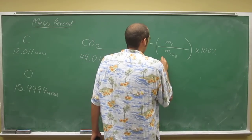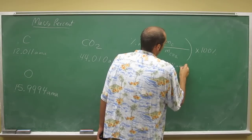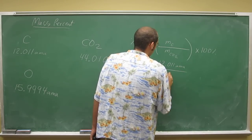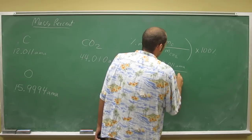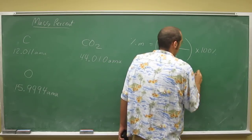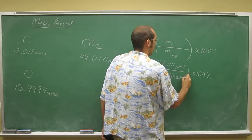The mass of carbon, 12.011 amu, remember your units, divided by 44.010 amu times 100%. AMUs cancel.